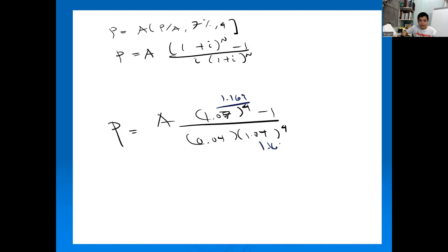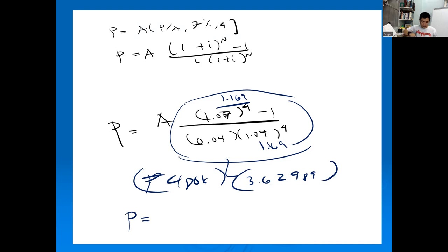The difference is 1.169 minus 1 divided by 0.07 times 1.169. This term equals approximately 3.62. A is 480,000, so that's 480k multiplied by this factor. The present worth investment needed will be approximately 1.74 million pesos.